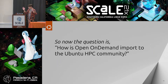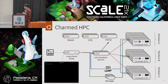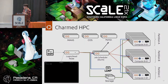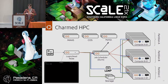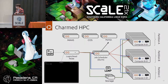How is Open On Demand important to the Ubuntu HPC community? As a community in Ubuntu HPC, we're currently working on developing a Charmed application called Charmed HPC — Charmed High Performance Computing. We're looking to leverage traditional high-performance computing practically wherever you want it — on Azure, AWS, or even a local LXD instance on your laptop. This is the current architecture of Charmed HPC.